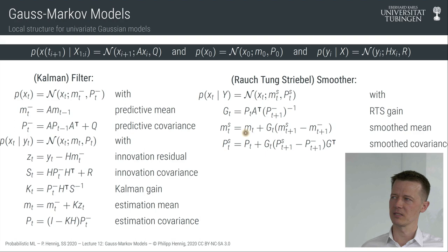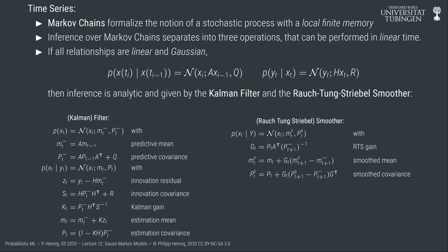We've spoken about Markov structured models and seen that inference in such models is of computational complexity linear in time. That abstract statement doesn't tell us yet what the inference actually is. But if we make jointly Gaussian assumptions and linear relationships between variables, then we have a linear Gaussian system, and in such systems inference on all marginal distributions separates into Kalman filtering and RTS smoothing.